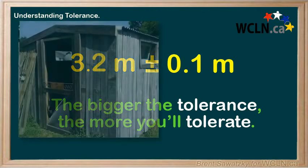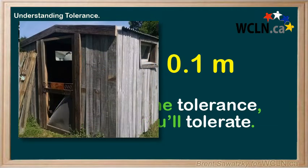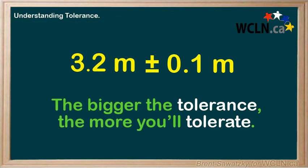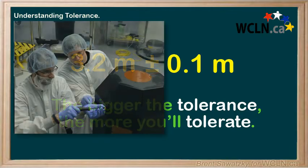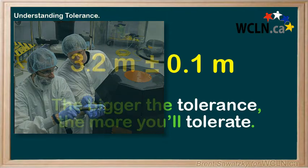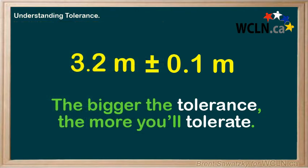If you're cutting boards for an old shed, you may allow a large tolerance — you may tolerate boards being cut a centimeter short or a centimeter long without worrying about it much. On the other hand, if you're making a part for NASA, the tolerance might be very small. They can't tolerate much variation in a device that costs millions to get into orbit. There's very little room for error — low tolerance.